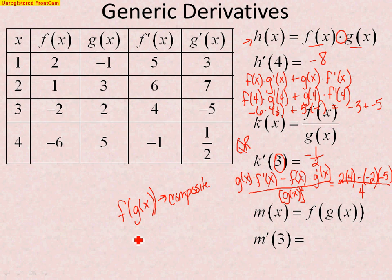A chain rule, we always say, is power out front, power one less, derivative of what's inside. But the actual generic formula for it, which is really important to remember, is it's the derivative of the outside with the inside unchanged times the derivative of what's inside. It's what we do with an actual function, but we don't always think about the symbols that go with it. So, now we want to figure out what happens when we put 3 in. So, this is saying f prime of g of 3 times g prime of 3.